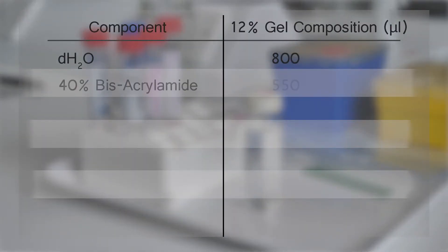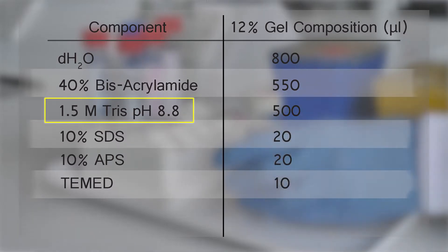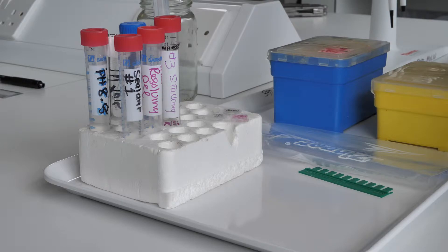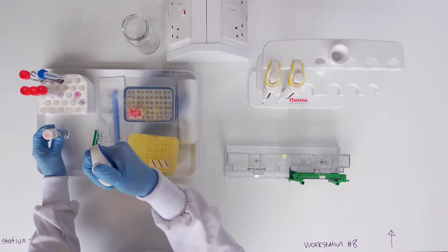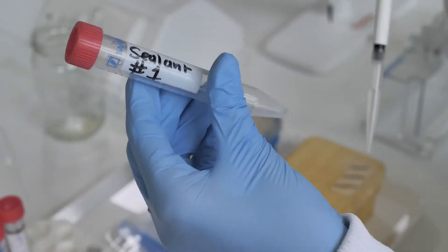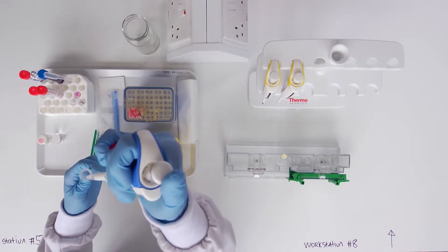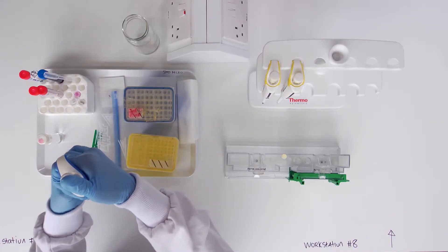First, prepare a sealant gel mixture containing the following components. It is important that you check that you use the 1.5 molar Tris pH 8.8, as a similar buffer at pH 6.8 is supplied for the stacking gel. Note that tubes are recapped immediately after use.